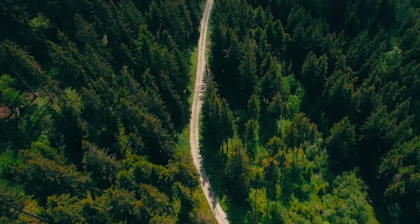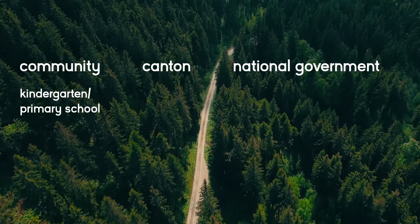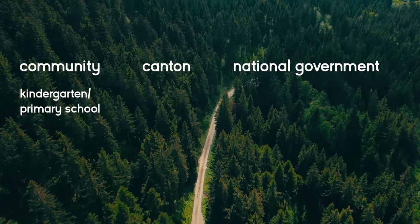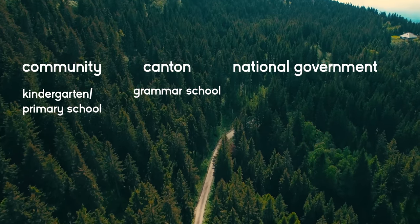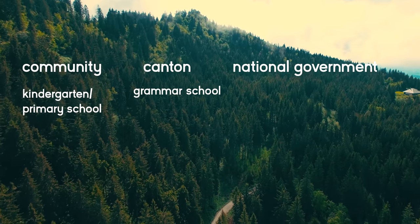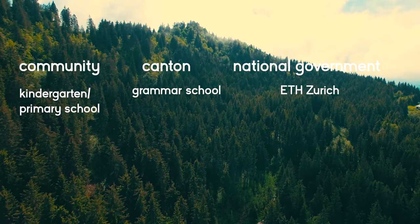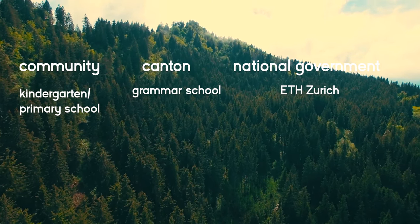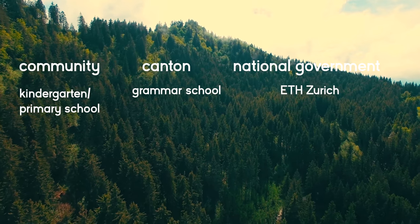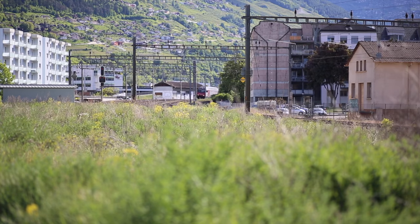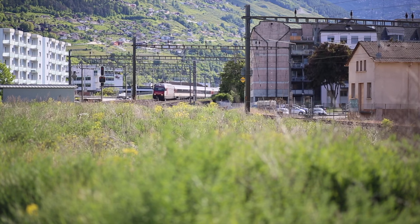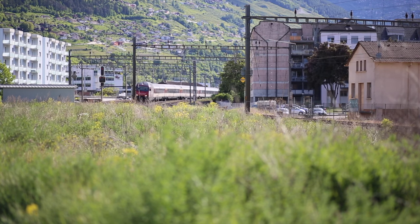For example, the communities are responsible for kindergarten and primary school, the canton for grammar school, and the confederation of Switzerland for, for example, the ETH Zurich, the university of technology in Switzerland. In this video we will mainly focus on the national political system because every canton works slightly differently from the others.